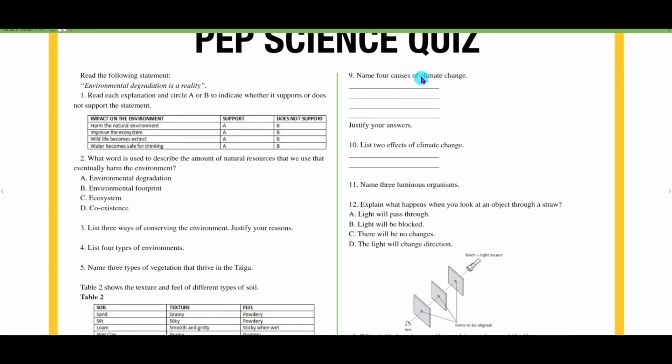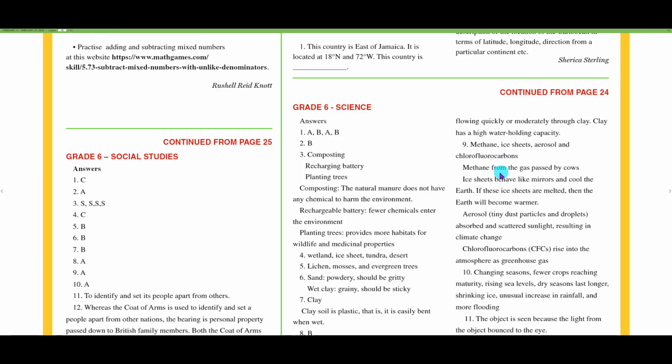Name four causes of climate change. They have methane, ice sheets, aerosols, and chlorofluorocarbons. Methane is the gas that is passed by cows. Ice sheets behave like mirrors and cool the Earth. If the ice sheets are melted, then the Earth will become warmer. Where we have large sheets of ice and glaciers, it acts like a mirror and bounces some of the light back out into space, helping to cool the Earth. But if this melts, all the rays of the sun will now directly hit the Earth and warm it.